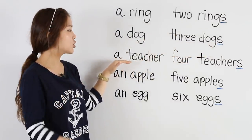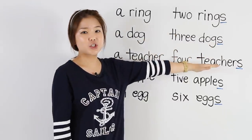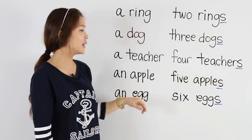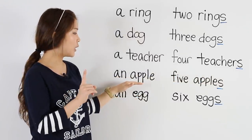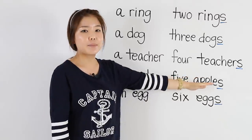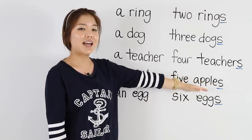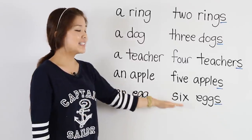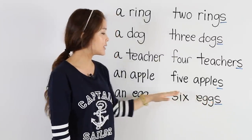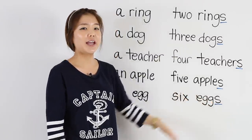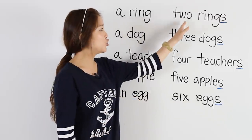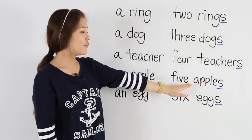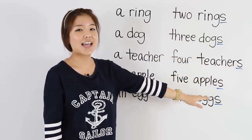A teacher — one teacher, becomes four teachers. Don't forget the S, you must not forget that. An apple — that's one apple — then we have five apples. And the last one: an egg — one egg — six eggs. Don't forget the S. So remember: two rings, three dogs, four teachers, five apples, and six eggs.